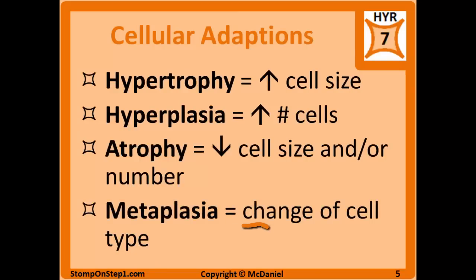Metaplasia is when there's a change in the cell type because the type of cellular stress has changed. It involves the replacement of one cell type with a different cell type that is better equipped to handle the new kind of stress placed on the tissue. An example would be Barrett's esophagus, where GERD leads to stomach acid retrograding into the esophagus, and stratified squamous esophageal cells are replaced by goblet cells which can create mucus to better handle the acid. Another example would be the replacement of pseudostratified columnar cells in the respiratory system with squamous epithelium as a result of frequent cigarette smoking.